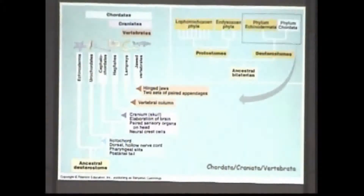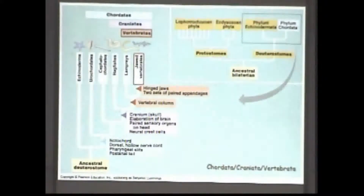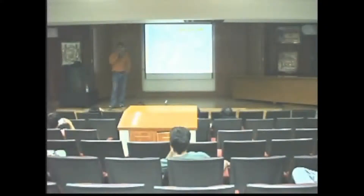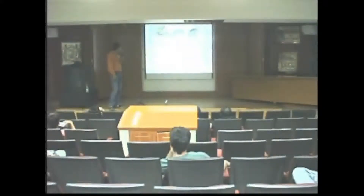Dentro de los cordados hay diferentes grupos. El grupo al que pertenecen los reptiles es: dentro de los cordados, a los craneados, porque poseen un cráneo; dentro de ellos a los vertebrados, porque el notocordio se osifica en una serie de vértebras. Dentro de los vertebrados pertenecen al grupo de los gnatostomados, porque poseen mandíbulas que se formaron a partir de dos arcos branquiales en su desarrollo embrionario. Estos gnatostomados se dividen en tres grupos hermanos, y los reptiles pertenecen a los eugnatostomados.